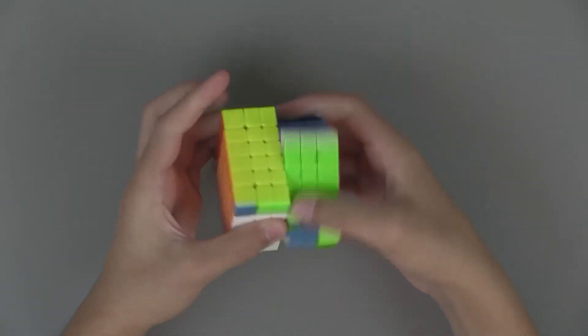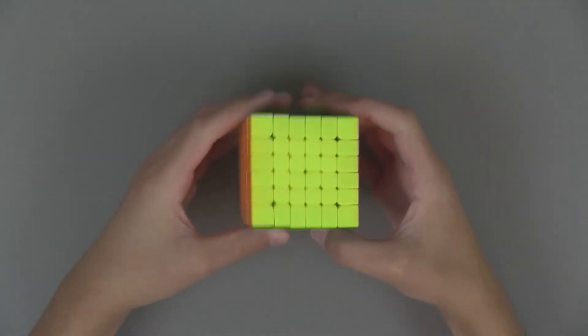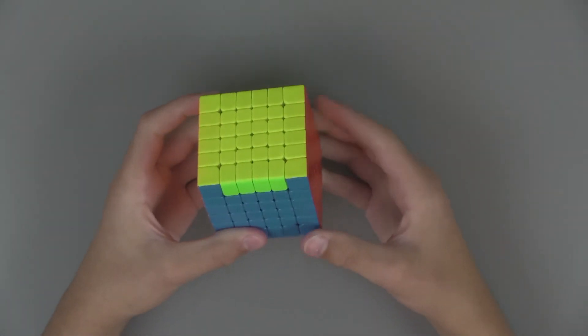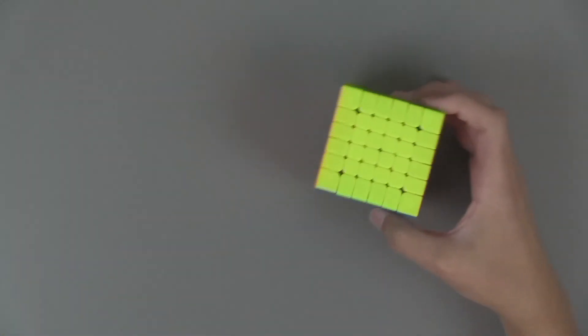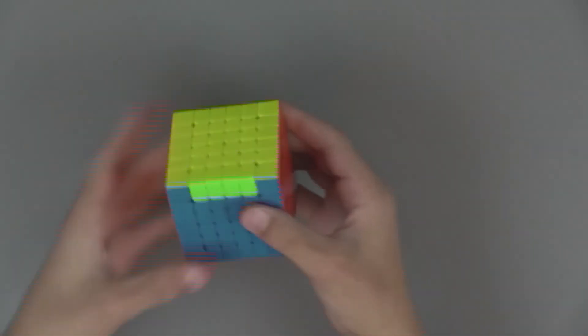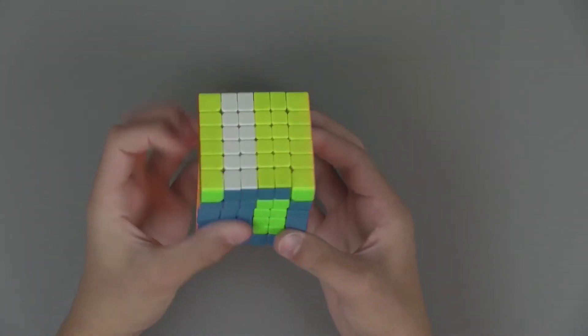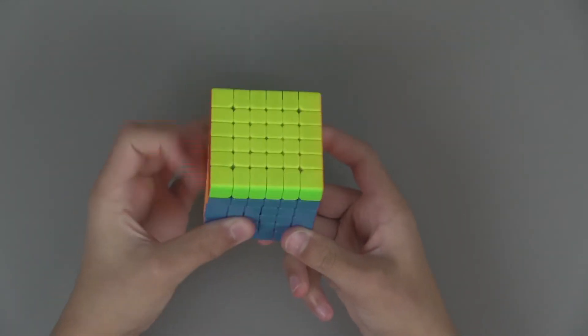Then PLL parity, which is just like 4x4 except on 4x4 you do these moves but on 6x6 you just do these moves. So just like this and it works just like 4x4.